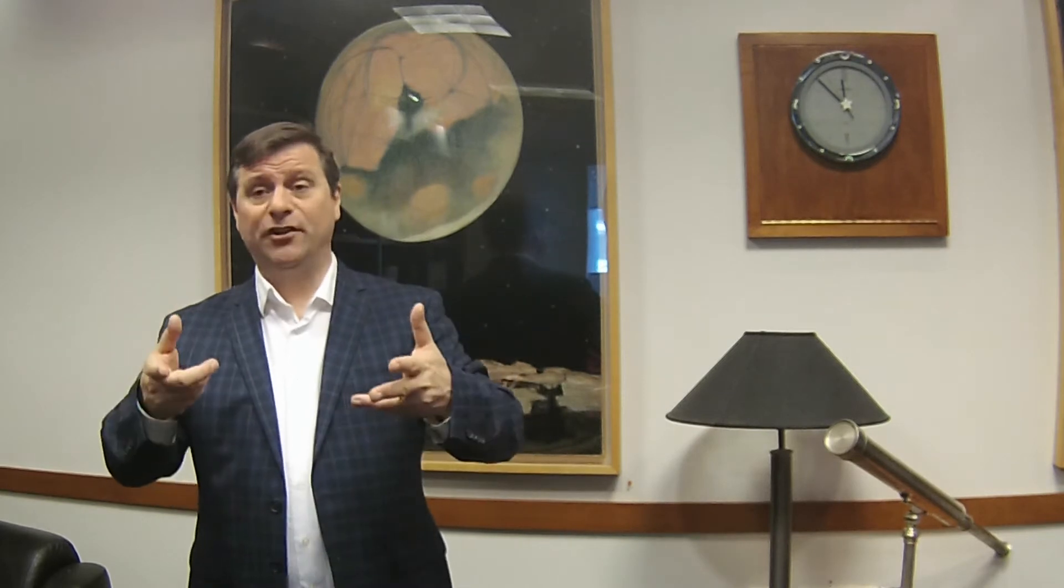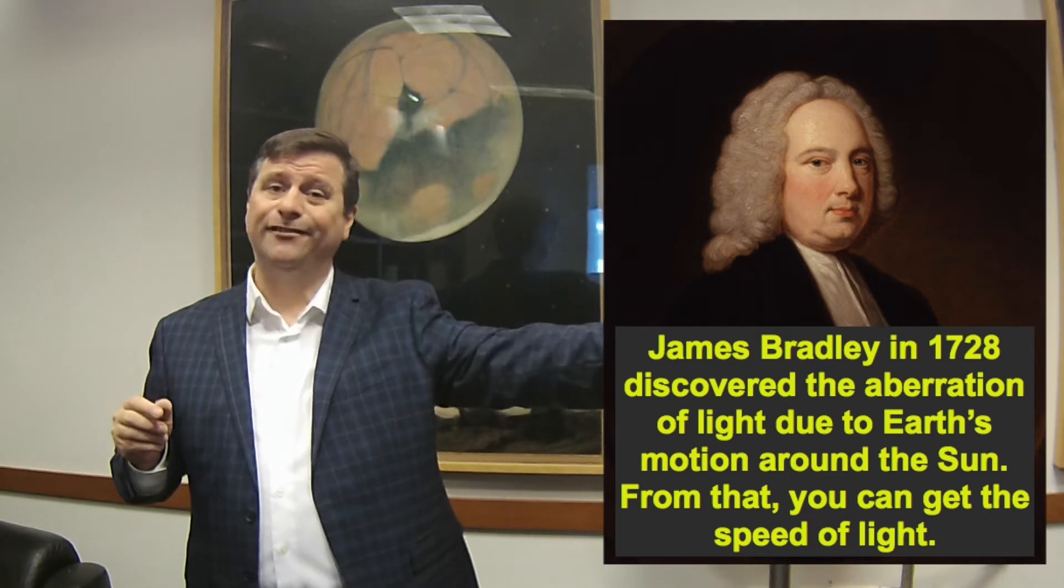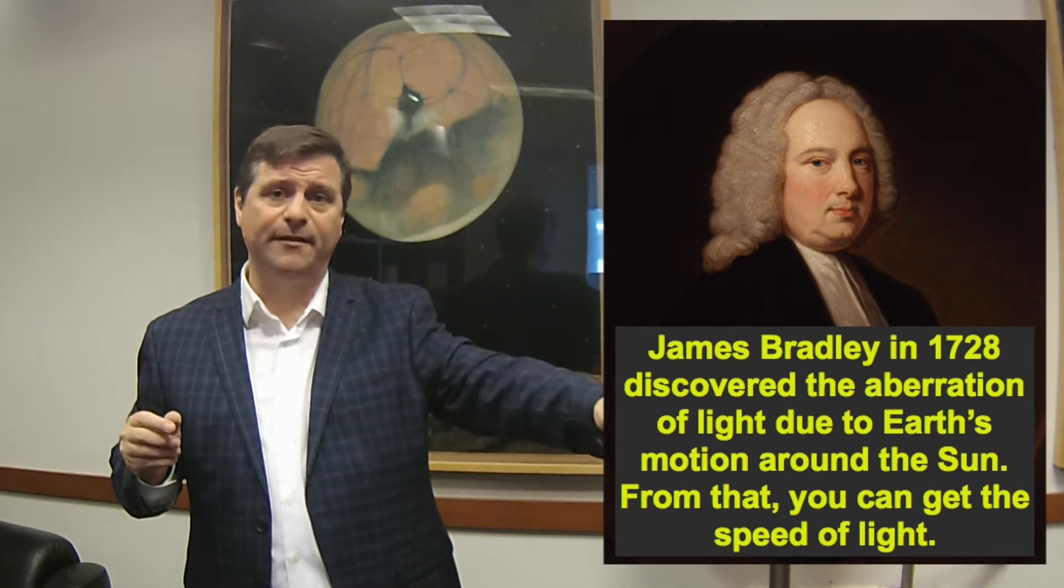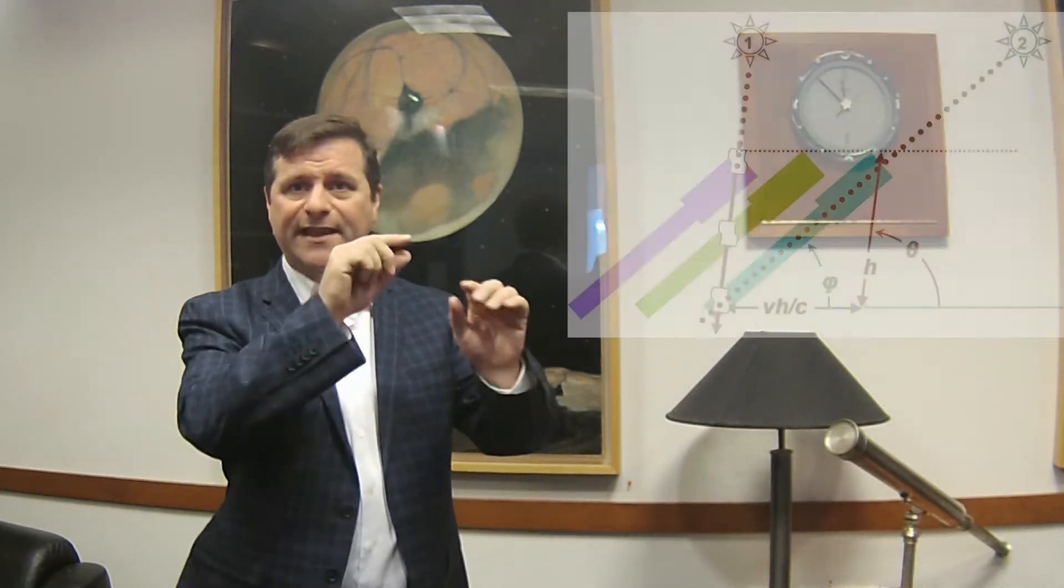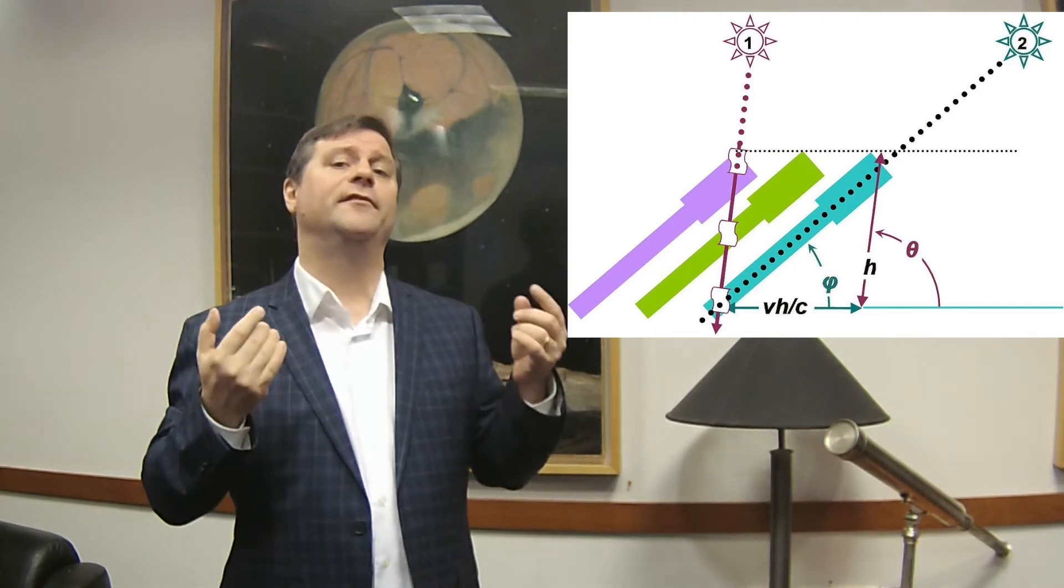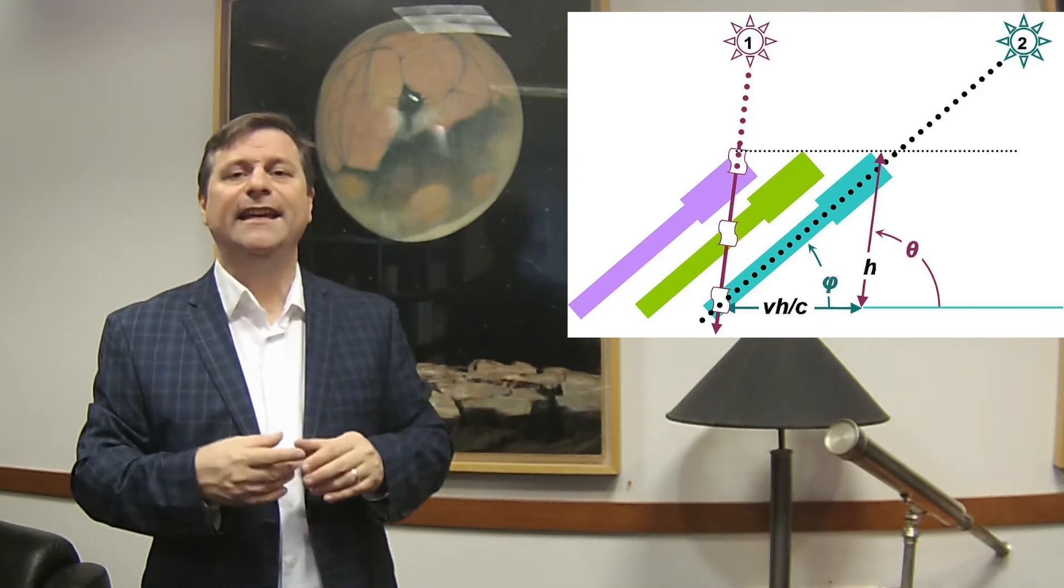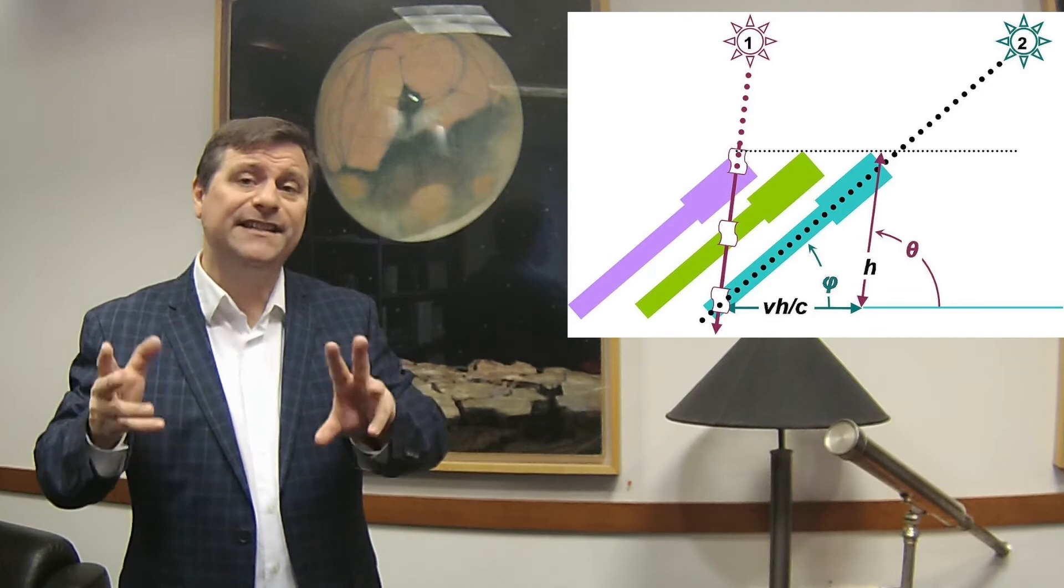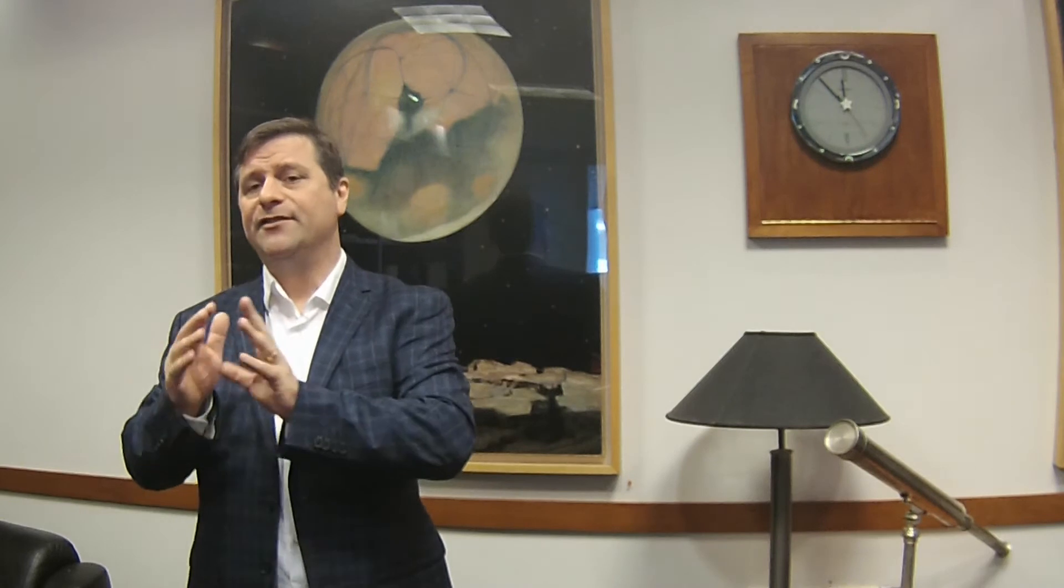In 1728, 50 years later, James Bradley measuring stellar aberration, trying to find parallax, but found aberration. The only way that he could account for the fact that the telescope was moving and that the pitch of the telescope had to be changed in order for the apparent position of the light to be in the correct place. He determined that the speed of light had to be about 300,000 kilometers per second in order for it to work.